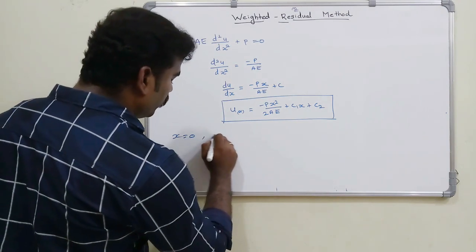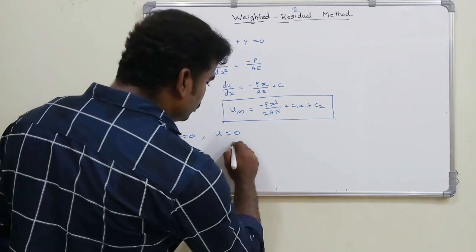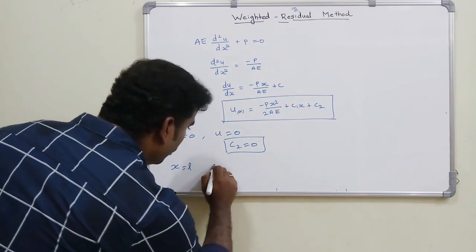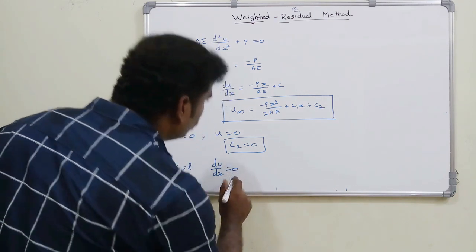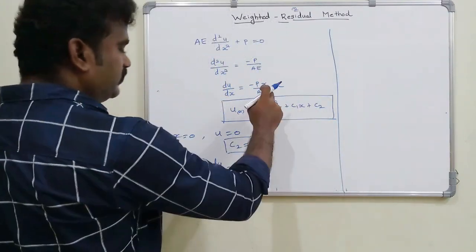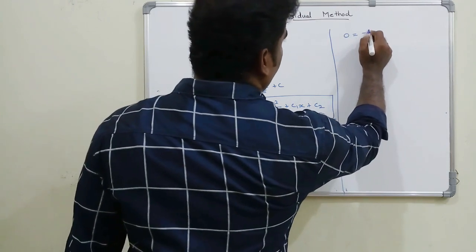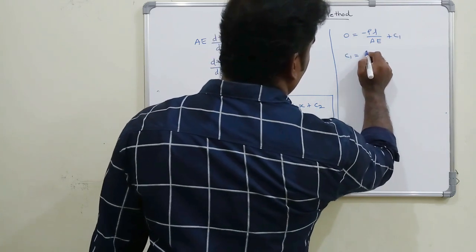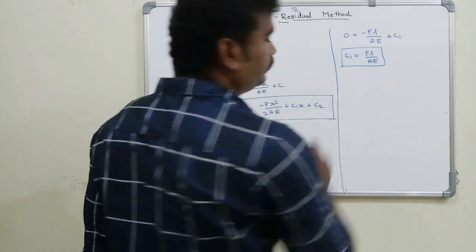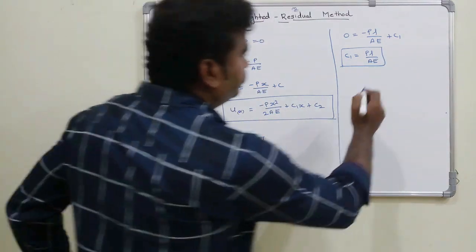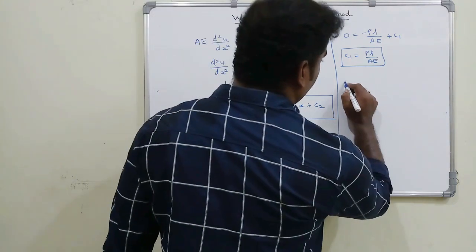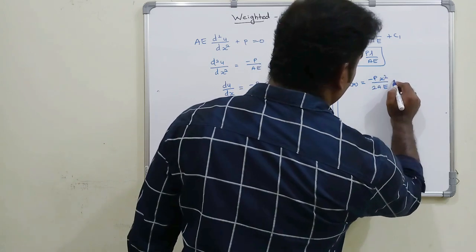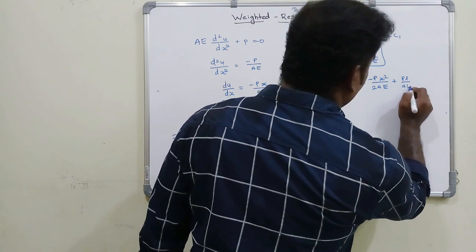Applying boundary conditions: at x = 0, u = 0 → c₂ = 0. At x = L, du/dx = 0: substituting gives 0 = −pL/(AE) + c₁, so c₁ = pL/(AE). Now we have both constants c₁ and c₂.